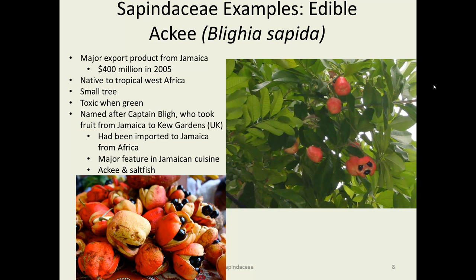Here's another one, the ackee, which is actually native to tropical West Africa. It was probably brought to Jamaica on slave boats, but has become very popular there and is a big staple in their foods. The ackee and saltfish dish is a staple in Jamaican culture, very popular, and has become an export product — $400 million worth exported in 2005. It's quite an important and attractive tree.